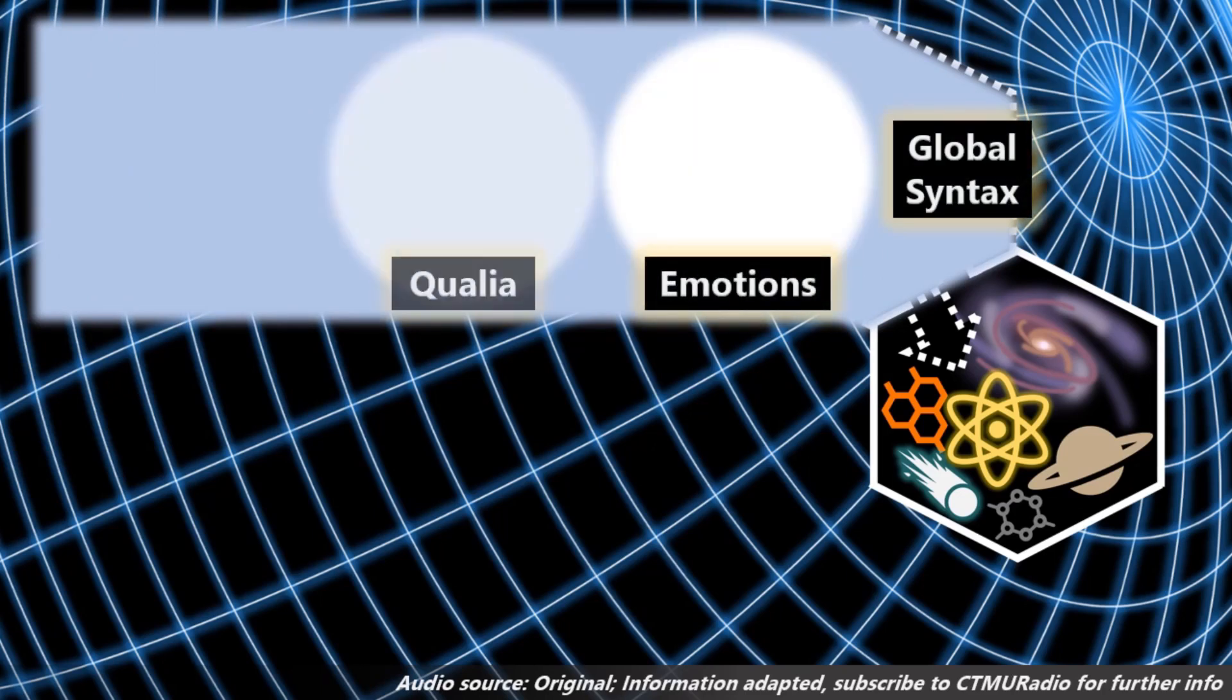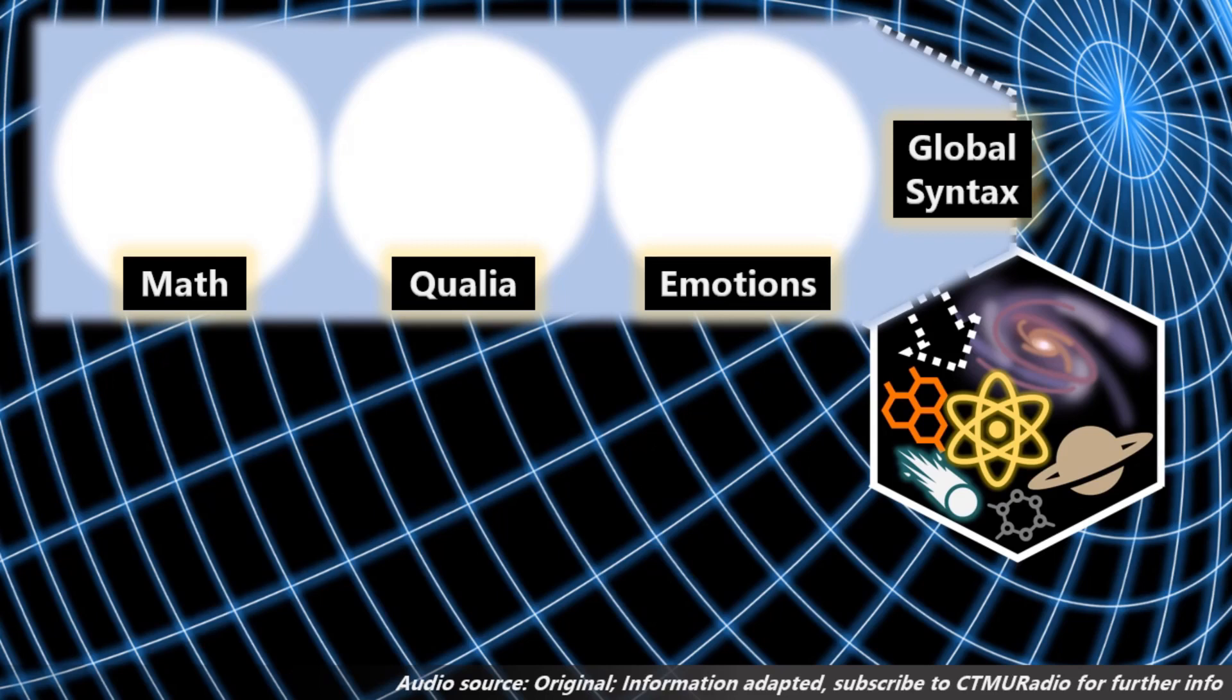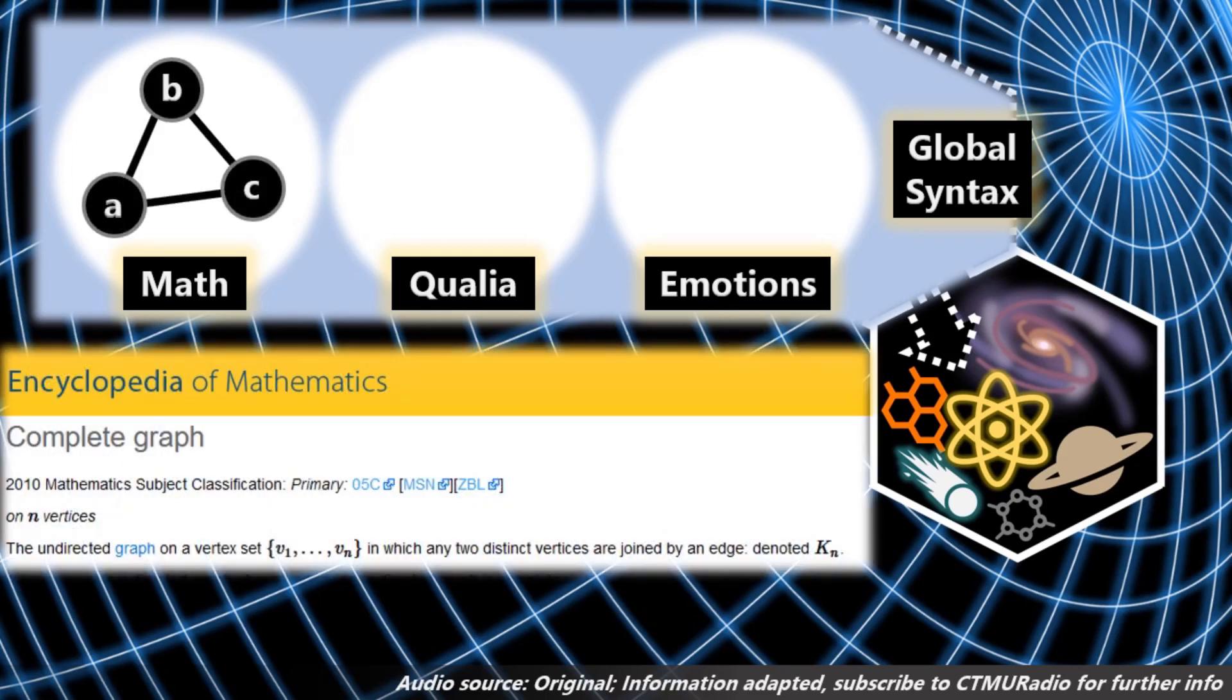Now, global syntax is where emotions, qualia, and mathematics reside. And they exist as bundles of attributes. And those bundles have the mathematical structure of a KN complete graph. A complete graph is a set of vertices and a set of edges connecting the vertices. For example, a triangle is a three graph. It's got three vertices.